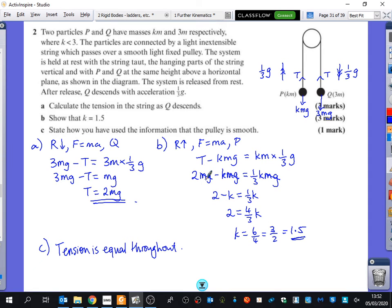The reason it is equal throughout, I said this before, is if it wasn't smooth, it might be like rusty or it might have friction, which means one side might be tugging down really hard and the other side might be quite loose. So that's why the tension is equal on both sides there.